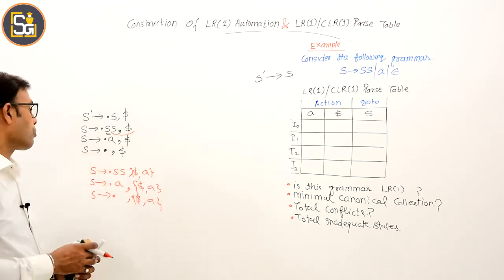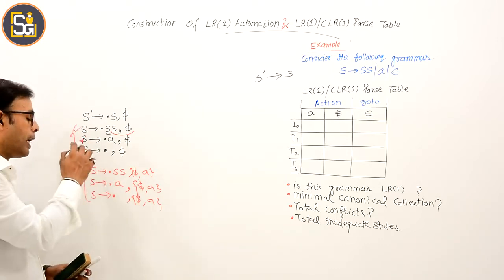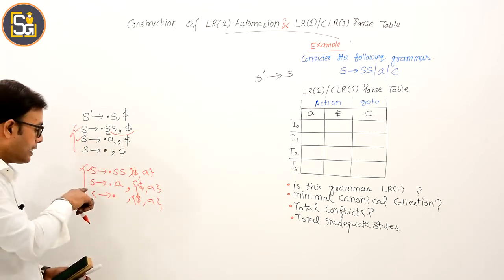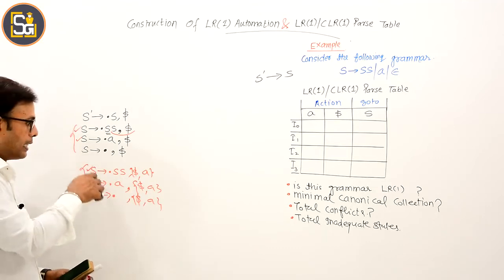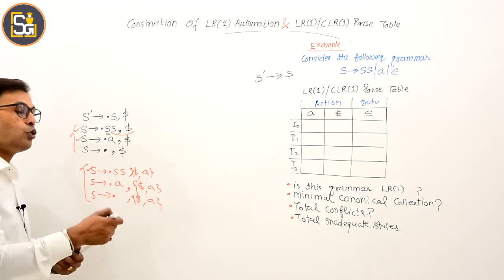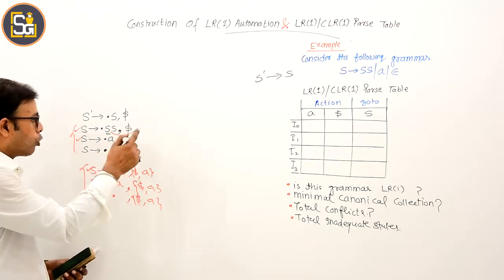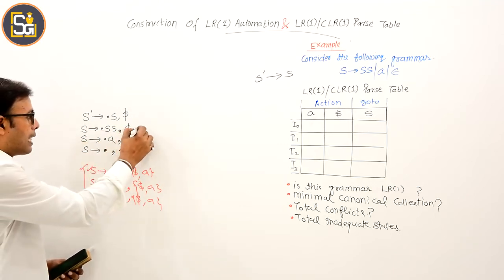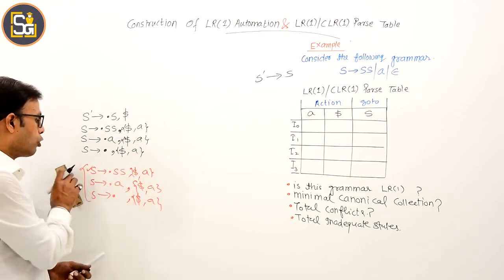अब इन तीन LR1 items को देखो — इनका LR0 item same है लेकिन lookahead different है. तो हम क्या करेंगे: LR0 item same रखेंगे और lookahead union कर देंगे. जैसे S derives dot S में dollar है, दूसरे में dollar/a है — दोनों को union करके एक साथ लिख देंगे. हमेशा ऐसे union करके एक जगह पर लिख देना है, और duplicate items को हटा देंगे.